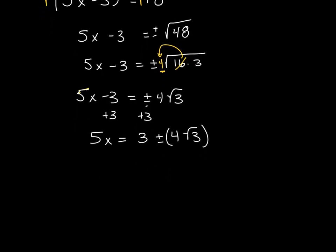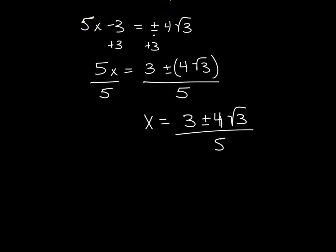And then, the last thing is because this 5 is being multiplied times x, I go through and divide both sides by 5. And then I am left with x is equal to 3 plus or minus 4 square root of 3 all over 5. And then, unfortunately for MyMathLab, you must write that out twice. I understand if we were in the classroom, I would just tell you to write it out once and I would take that answer, but that is not the options that we have right now.